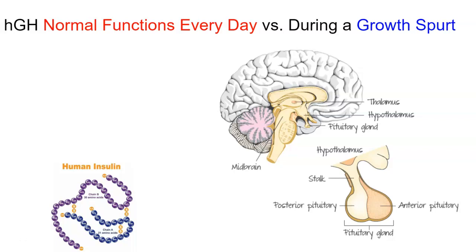First of all, it comes from a part of our brain called the anterior pituitary, and it would leave that part of our brain and go into our bloodstream and travel all over our blood going to specific types of cells. The interesting thing about human growth hormone is it's kind of different than other hormones because it's released in small quantities every single day. But we also have an increase of this hormone released when we're hitting a growth spurt during puberty. We're going to talk about the different things that it does depending on whether it's a normal everyday function or whether it's happening just during a growth spurt.